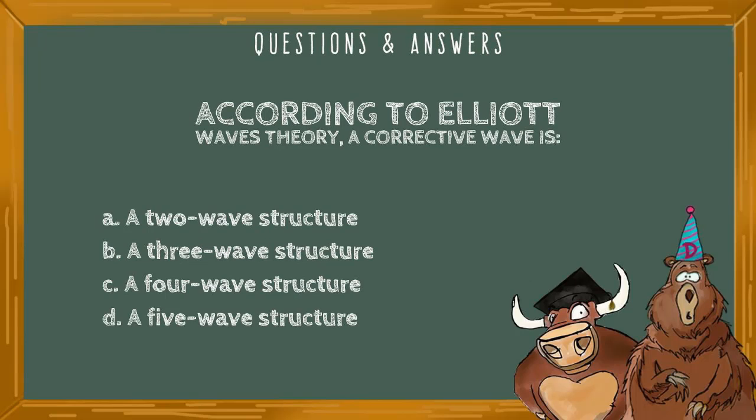According to Elliott Wave theory, a corrective wave is: a) a two wave structure, b) a three wave structure, c) a four wave structure, or d) a five wave structure.